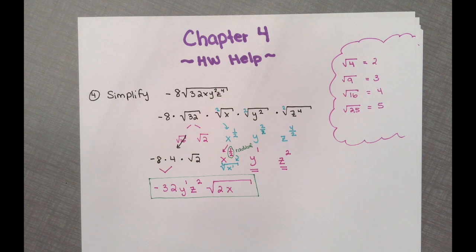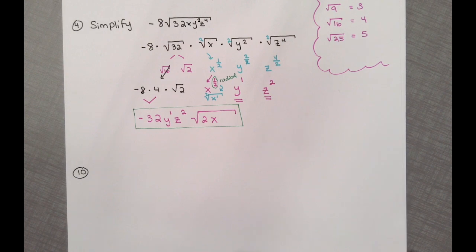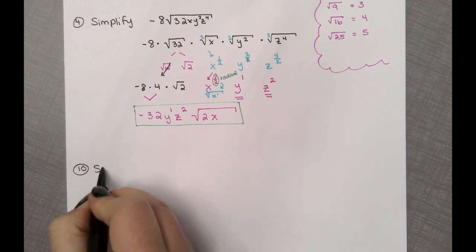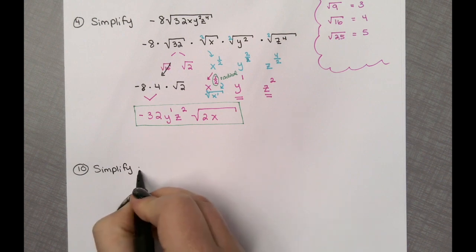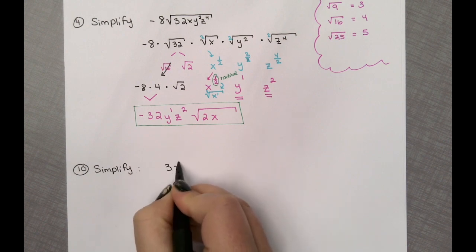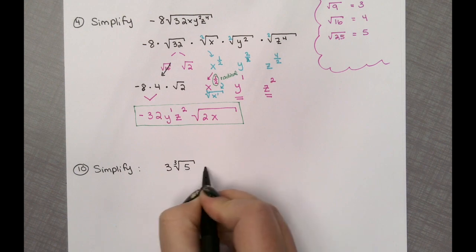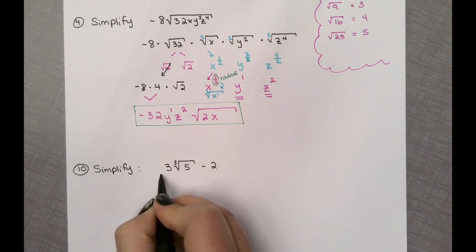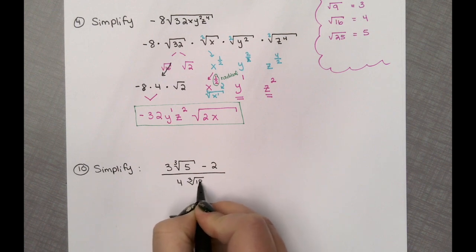Moving on to the next section. Let's do question number 10. For question number 10, again the instructions are to simplify. They are asking us to do 3 times the cube root of 5, minus 2, all divided by 4 times the cube root of 18. We did do this question in class and took the longer route, so I'm going to show you a slightly easier way to do cube roots when you need to rationalize the denominator.